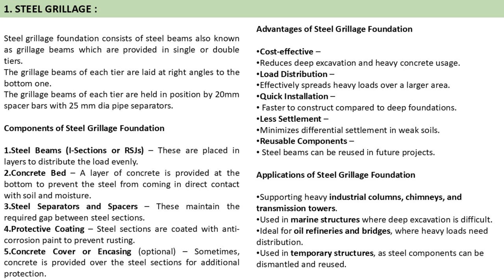Steel grillage foundation consists of steel beams, also known as grillage beams, which are provided in single or double tiers. The grillage beams of each tier are laid at right angles only. The grillage beams are held in position by 20 mm space bars with 25 mm diameter pipe separators. The components of steel grillage foundation are: steel beams placed in layers to distribute the load evenly; a concrete bed layer at the bottom to prevent the steel from coming in direct contact with the soil; steel separators and spacers which maintain the required gap between steel sections; and a protective coating — steel sections are coated with anti-corrosion paints to prevent rusting.